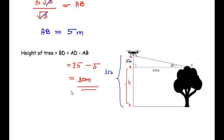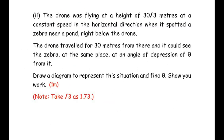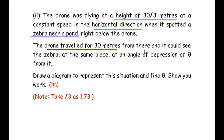Now let us move on to the second sub-question. The drone was flying at a height of 30√3 meters at a constant speed in the horizontal direction when it spotted a zebra near a pond right below the drone. The drone traveled for 30 meters from there and could see the zebra at the same place at an angle of depression of theta. Draw a diagram to represent the situation and find theta. Show your work. This is for one mark.